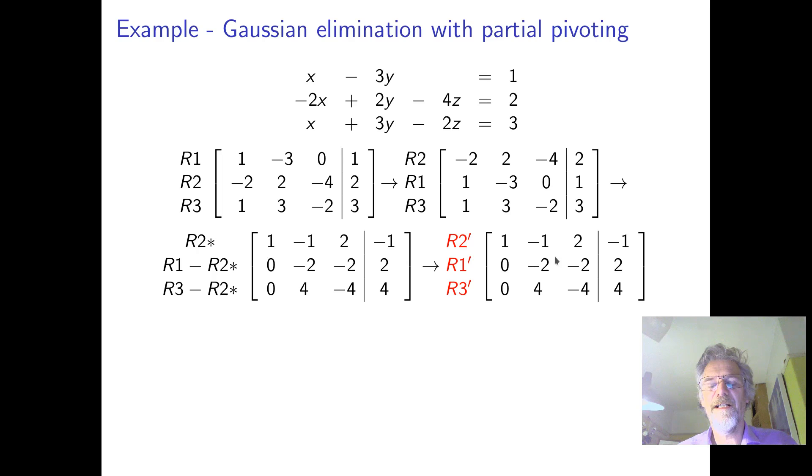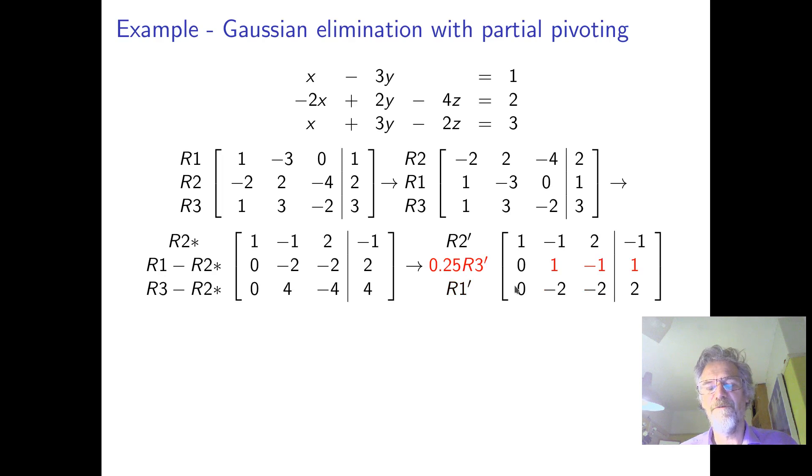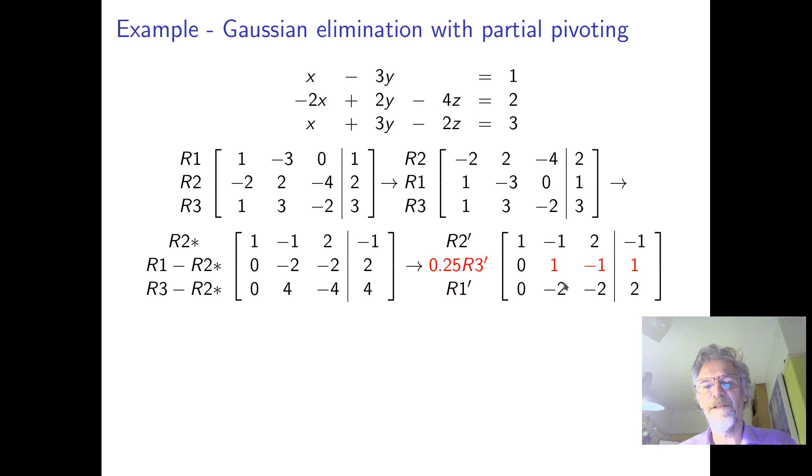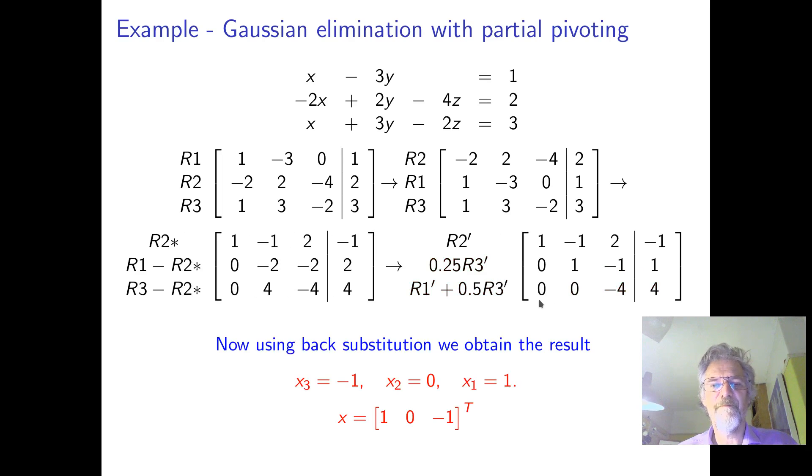And then of course, we're going to look down this column. And it's the four that we want, that's the biggest number. So we swap that one up to four. We divide through by four, making that one. And then we add two of that to the other row. So to get rid of that number, just look that. It's minus two. So we need twice this row.